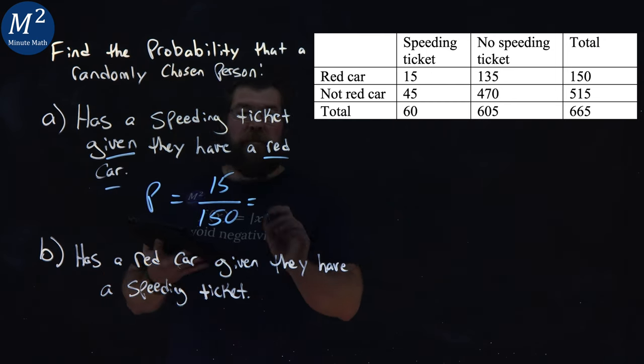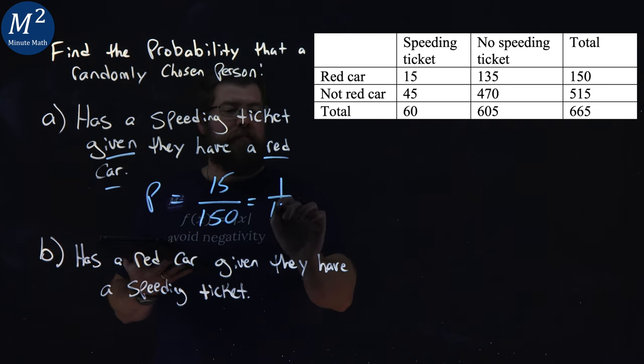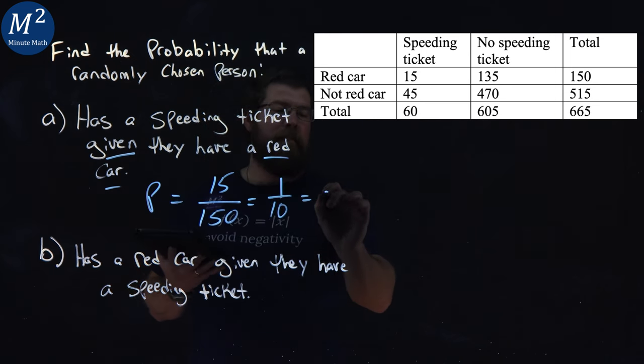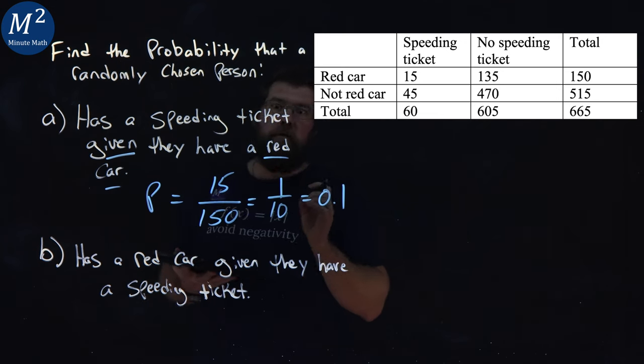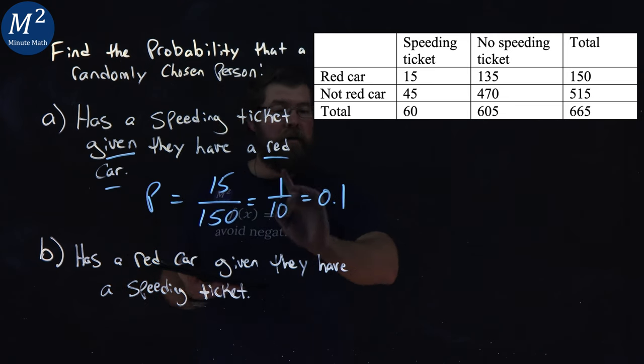Well this just simplifies here to be 15 over 150 to be 1 over 10, and that is 0.1. So the probability that they have a speeding ticket given their red car is 0.01.